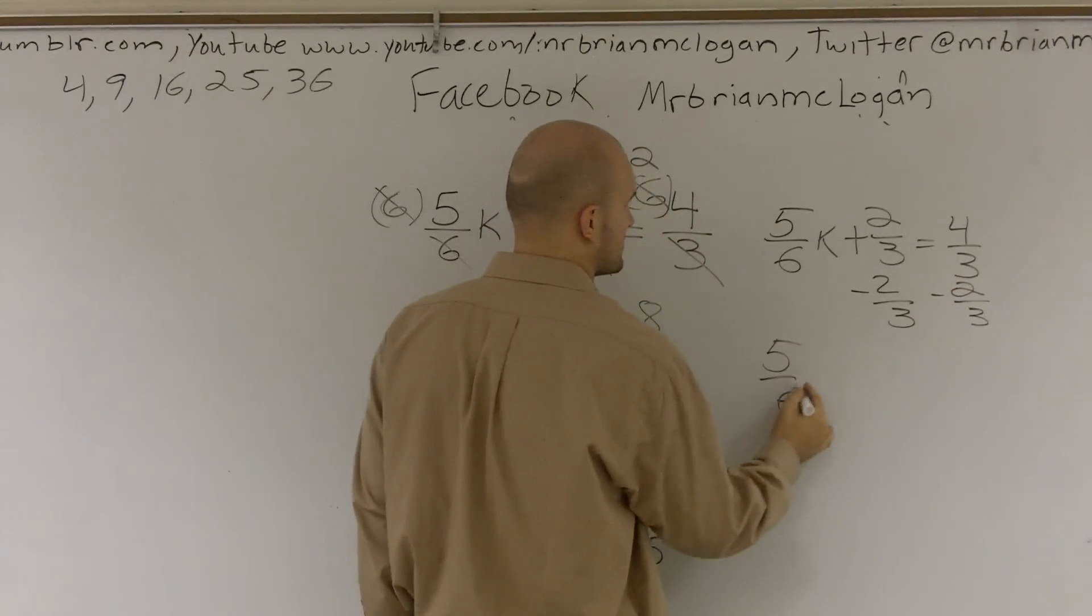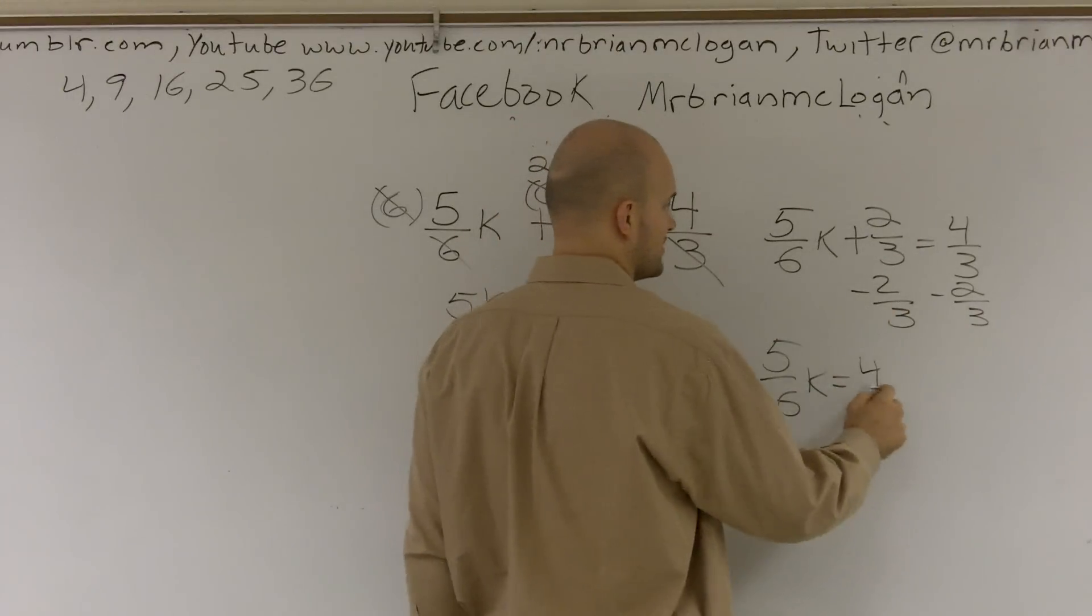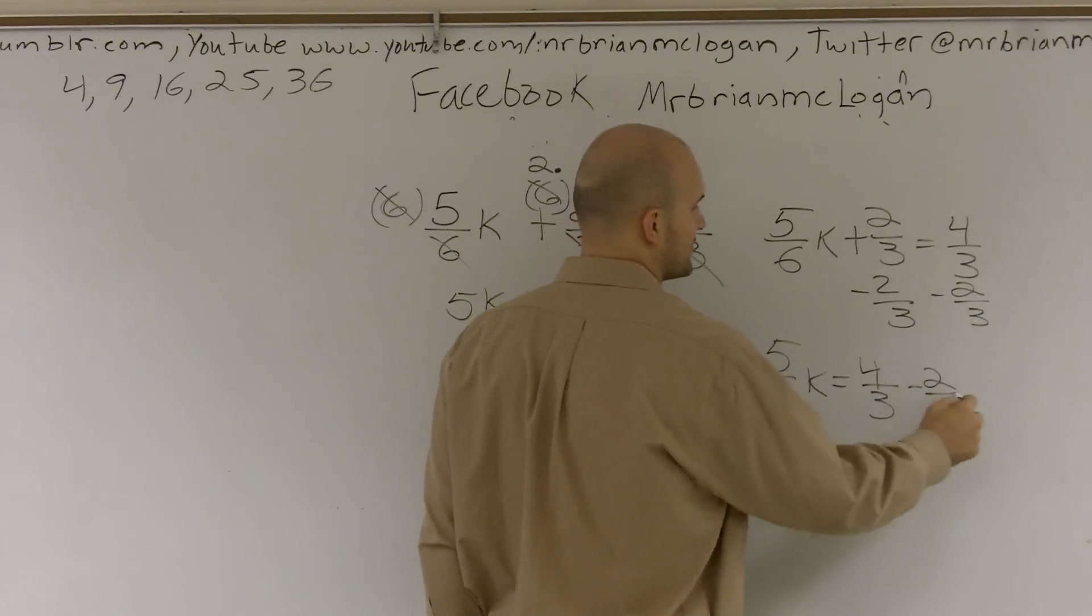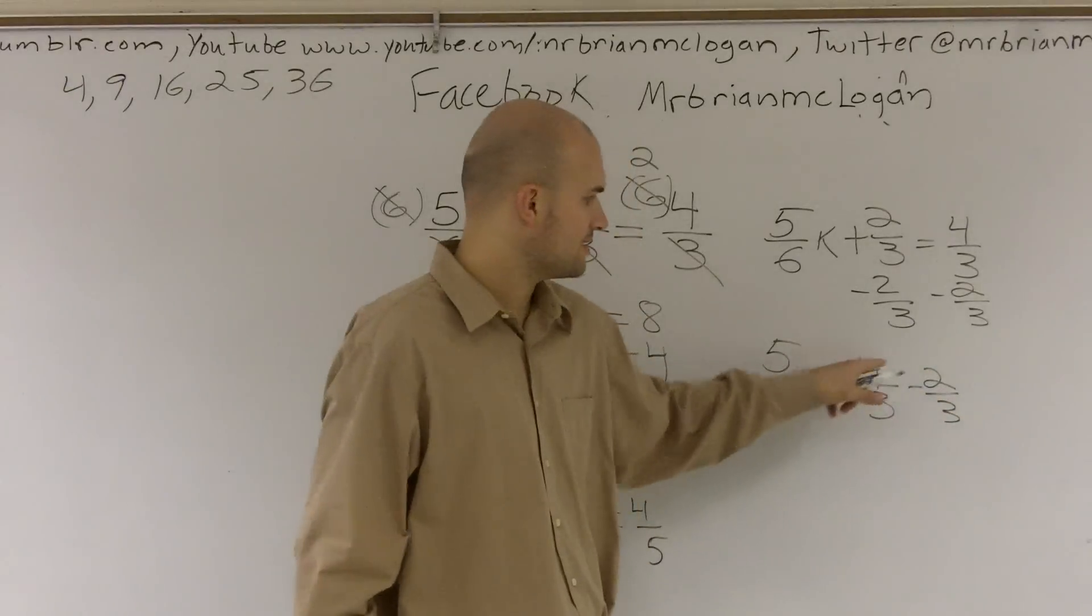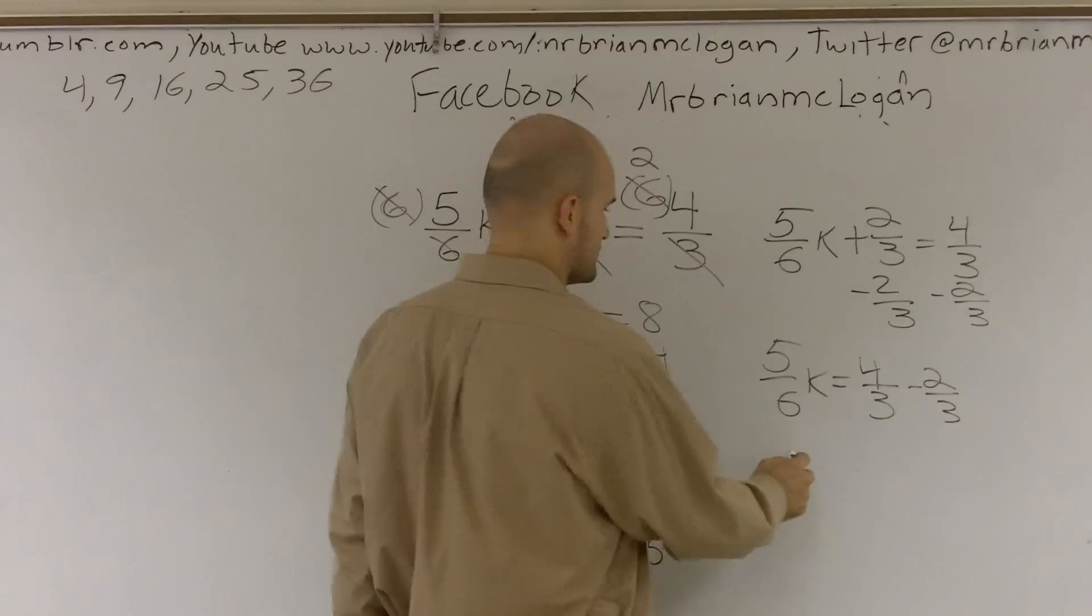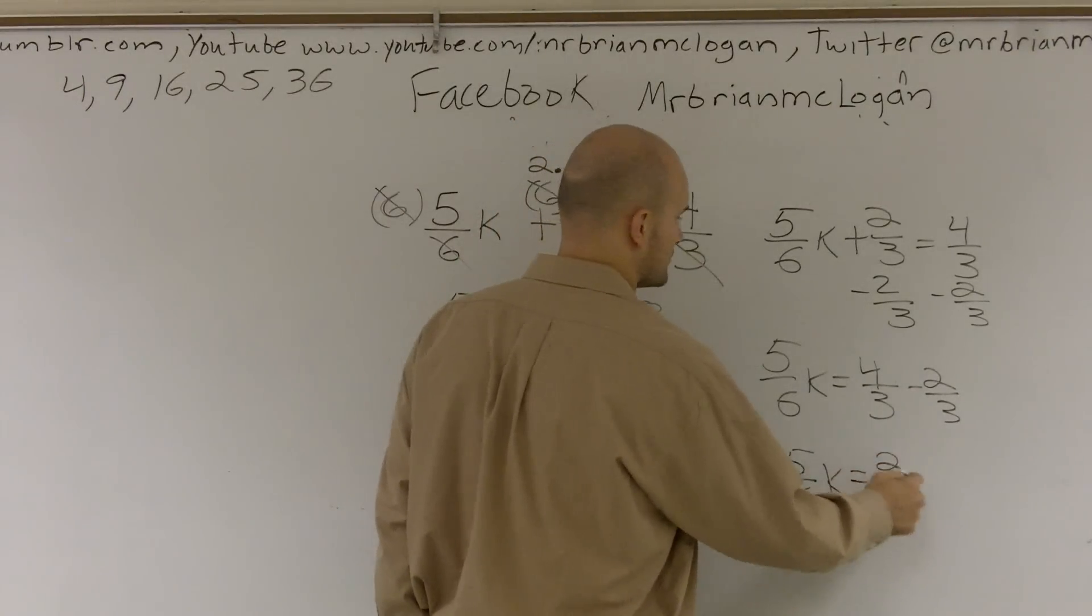Therefore you get 5 over 6k is equal to, well, what's 4 thirds minus 2 thirds? Since our denominators are the same, we subtract the numerators and we get 2 thirds. So 5/6k is equal to 2 thirds.